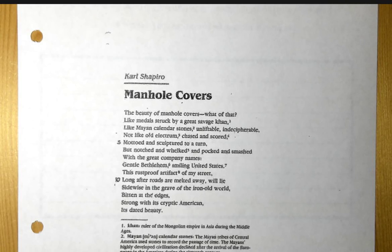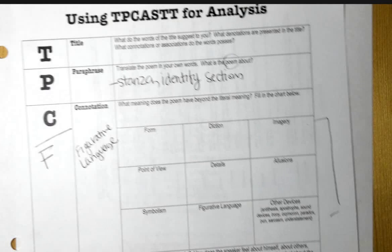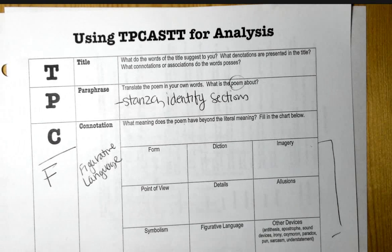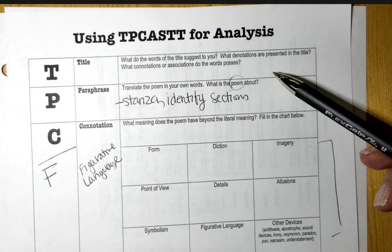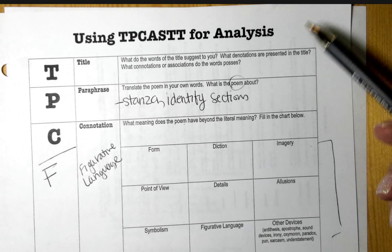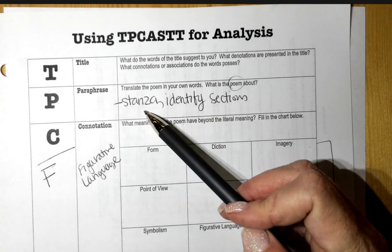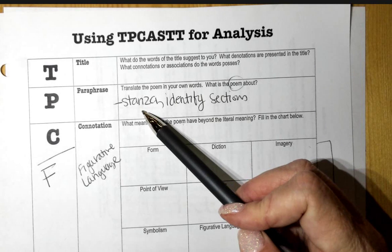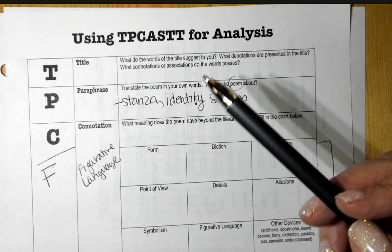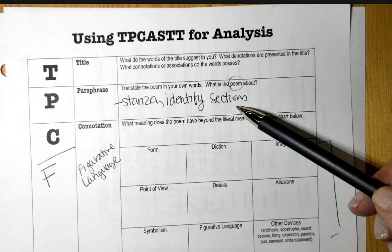So let's jot down a couple of things I want you to add. Under TP CAST, if you're looking at it, we're going to look at the title and dig into the poem first that we're going to work on today. When you paraphrase, notice I would paraphrase by the stanza. In our poem today there isn't a stanza, so we're going to need to identify sections, and we'll work on that together.